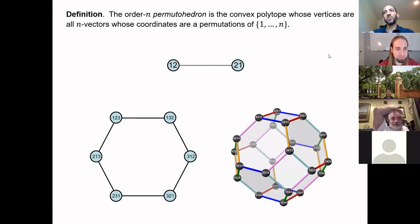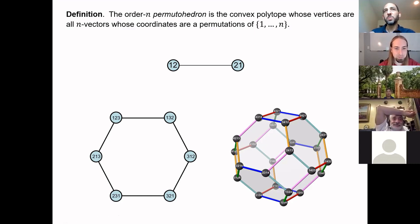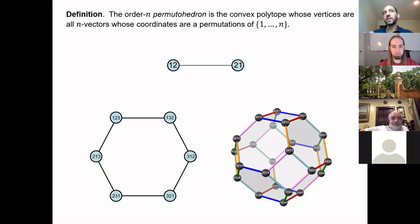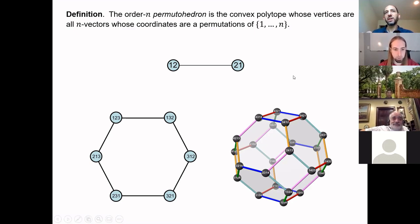So what is this word 'permutohedron'? The permutohedron is a polytope where the vertices are permutations — more precisely, it's the convex hull of all n-dimensional vectors whose entries are 1 through n. For example, the n equals 2 case has vertices (1,2) and (2,1), giving just a line segment, which is this first polytope.